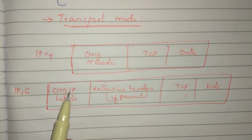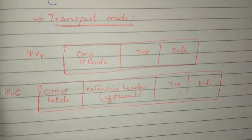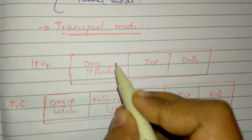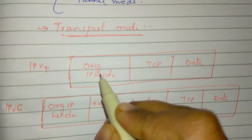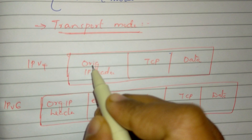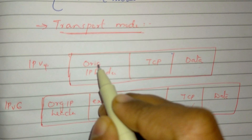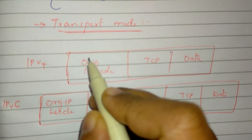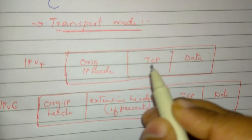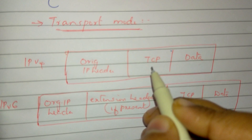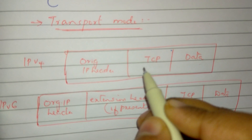In IPv4 transport mode, we add the AH after the original IP header and before the payload — that is, before the TCP segment.